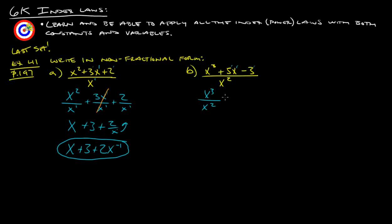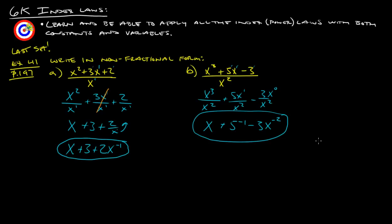For the last example: (x cubed plus 5x minus 3) over x squared. Rewrite as x cubed over x squared plus 5x over x squared minus 3 over x squared. x to the 3 minus 2 gives x to the 1st; x to the 1 minus 2 gives x to the negative 1st; and 3 over x squared — thinking of it as x to the 0 over x squared, that's 0 minus 2, giving 3x to the negative 2nd. Final answer: x plus 5x to the negative 1st minus 3x to the negative 2nd. You've learned and should now be able to apply all 7 index laws with both constants and variables.